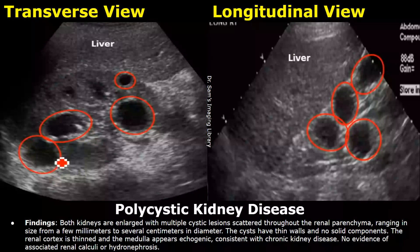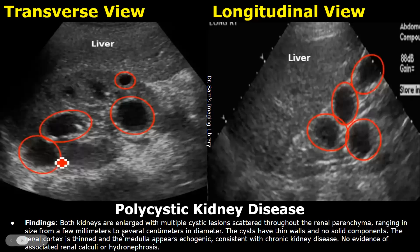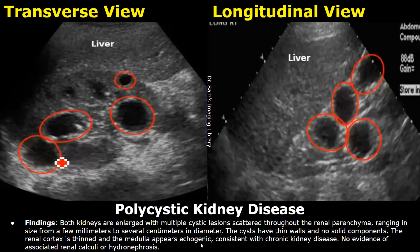Our next case is polycystic kidney disease. These are the findings. Both kidneys are enlarged with multiple cystic lesions scattered throughout the renal parenchyma, ranging in size from a few millimeters to several centimeters in diameter. The cysts have thin walls and no solid components. The renal cortex is thinned and the medulla appears echogenic, consistent with chronic kidney disease.